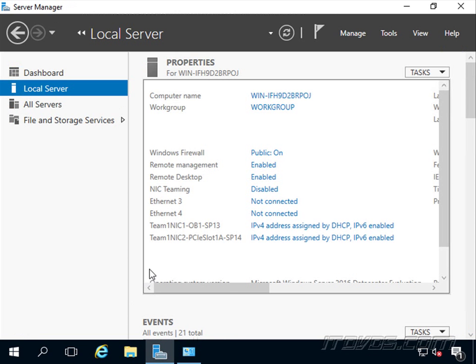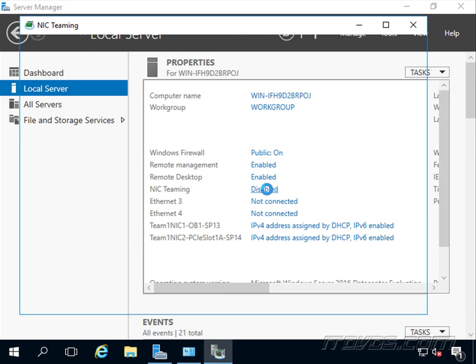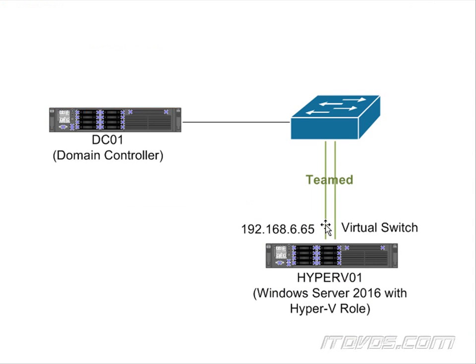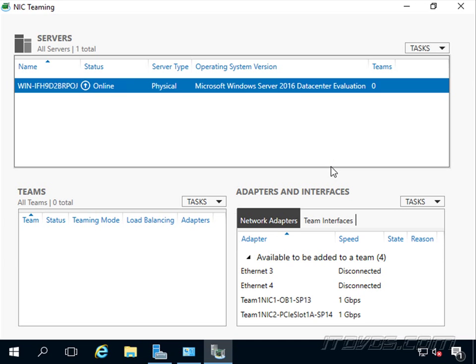Let's go to Server Manager and for NIC teaming, let's click on disabled. We're going to create a team out of these two NICs, which makes it look like one NIC. That's going to give us some load balancing so we can use both NICs at the same time, and it's going to give us some redundancy so that if one NIC goes down the other is still up. We could use more NICs if we need more bandwidth - four or six even.